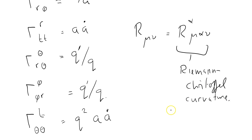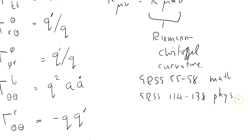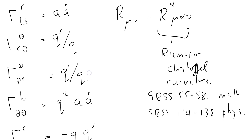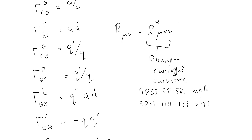It's discussed in great detail in General Relativity Step by Step, pages 55 through 58 inclusive, which talks about the mathematics, and GRSS 114 through 138, which talks about the physics. This is a non-trivial physical concept. So if you want to revise what the Riemann-Christoffel curvature tensor is and its physical significance, you've got these resources available.